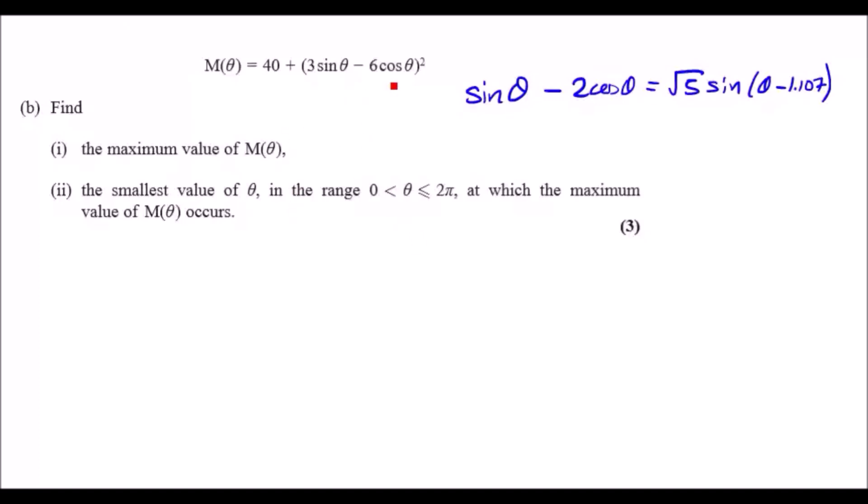This means this is three times bigger than √5 sin(θ - 1.107), so that's three times bigger, so we can replace that in a minute. So this means now in order to find a maximum value, you can really just do it by looking at the equation.